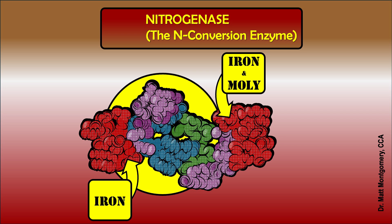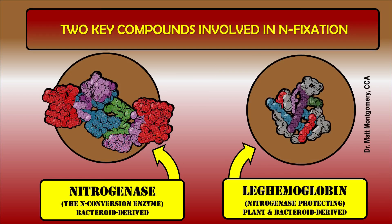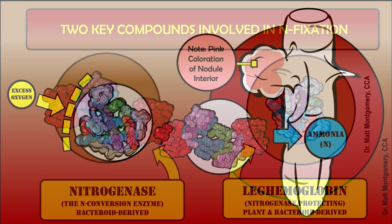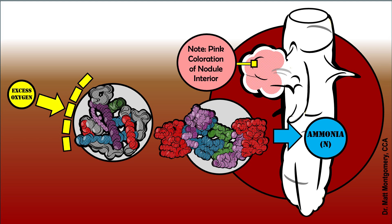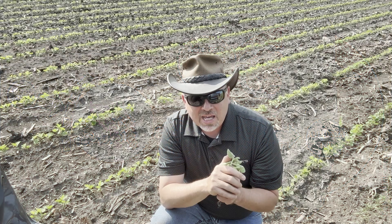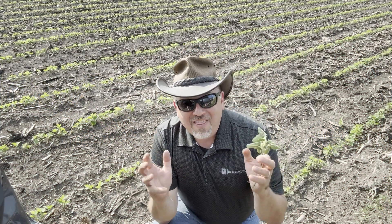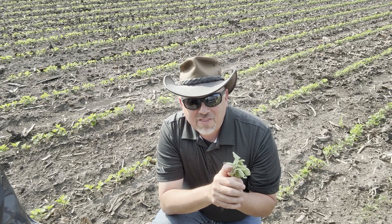There's another material inside that nodule called leghemoglobin that acts like a shield. Nitrogenase can't tolerate too much oxygen, or it shuts down, and leghemoglobin shields that material from oxygen. That's the background on how we actually get nitrogen from these nodules, and that is the reason why the interior of the nodule is pink — that's the presence of leghemoglobin. That's why pink inside the nodule is an indication of whether that nodule is functioning or not.